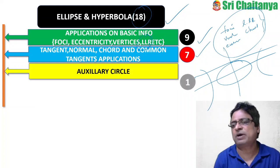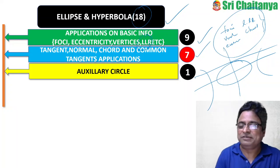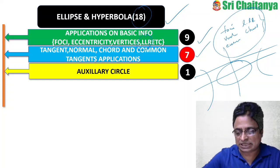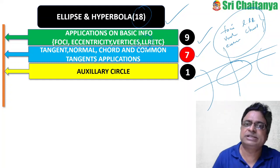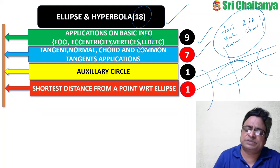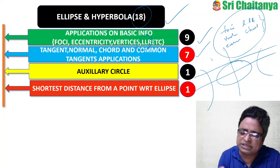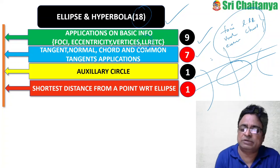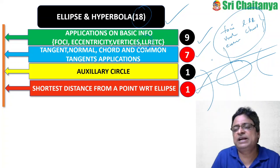The third ellipse/hyperbola subtopic is the auxiliary circle — questions were framed as finding the locus of the foot of the perpendicular from the foci onto the tangent, which is the auxiliary circle indirectly. Understanding the concept behind the definition is crucial. The fourth subtopic is shortest distance from an external point to the ellipse — essentially a maximum-minimum application — 1 question was asked.